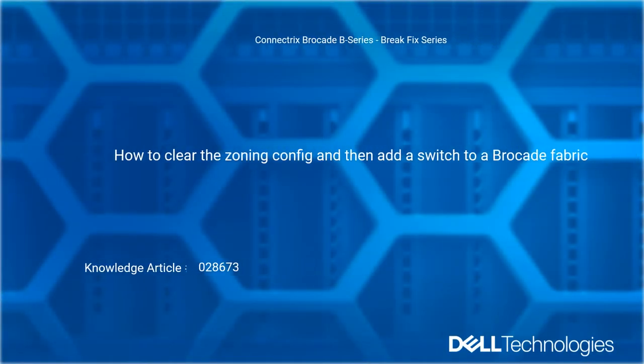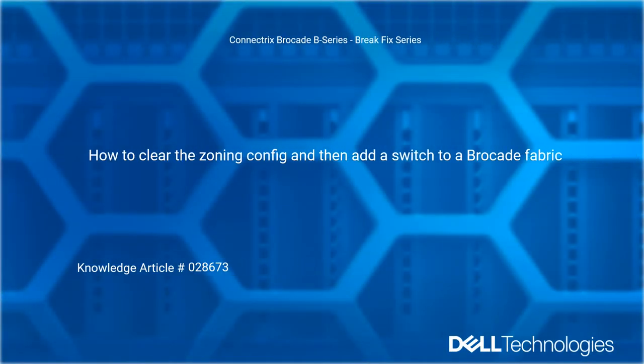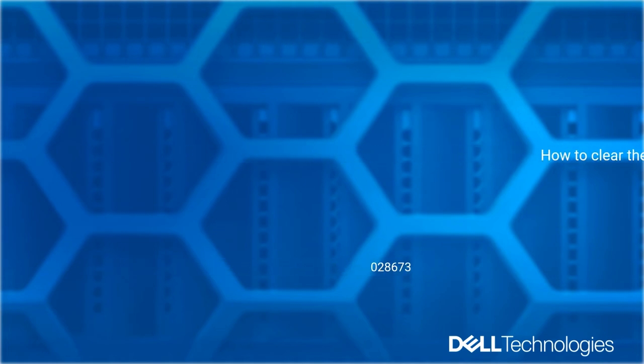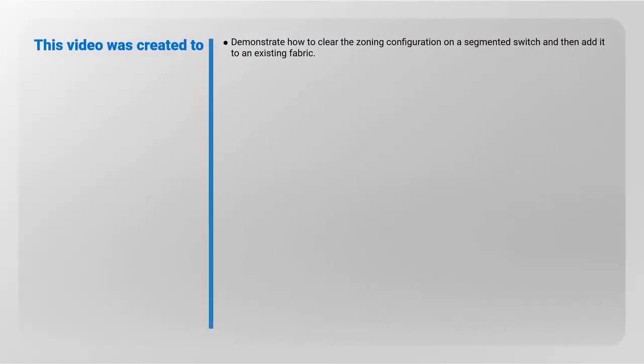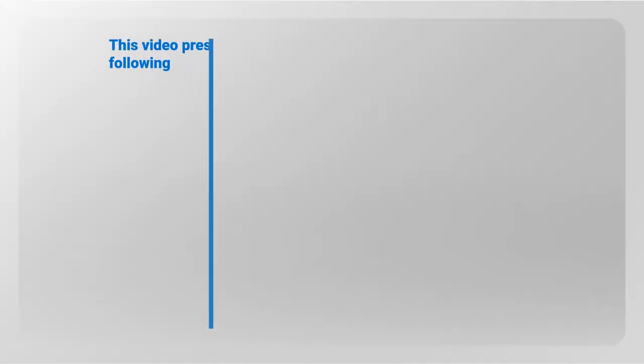Welcome to Dell Technologies Connectrix Brocade B-Series break-fix series: how to clear the zoning config and then add a switch to a Brocade fabric. Reference Dell Knowledge Article number 0286673. This video demonstrates how to clear the zoning configuration on a segmented switch and then add it to an existing fabric.